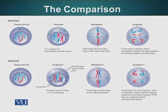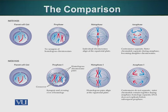You can see mitosis on top and meiosis on the bottom. The parent cell is 2N. At prophase of both mitosis and meiosis, the chromosomes have condensed and the centrosomes have divided. However, the big difference here is that there is synapsis in meiosis but not in mitosis.